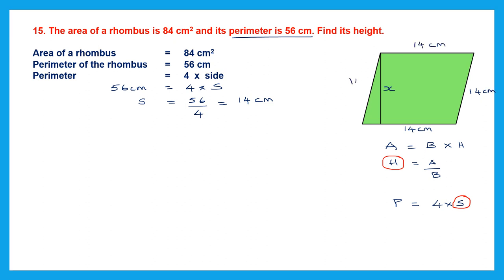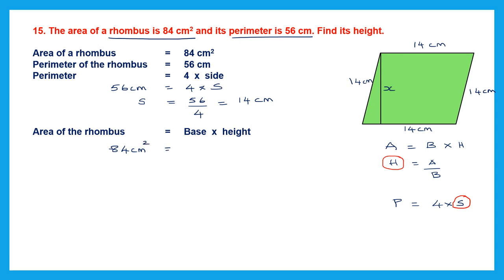Now we have the base. Using the area formula — base into height — area is 84 centimeter square and base is 14 centimeters. Height x equals 84 divided by 14, which is 6. So the height is 6 centimeters.